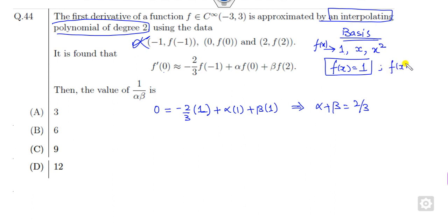Second, consider f(x)=x. The derivative is 1. At point 0, it is 1 minus 2/3. What is f(-1)? It will be -1. What is f(0)? It is 0. What is f(2)? That is 2. When you solve them, you get 1/3 equals 2 beta, so beta equals 1/6.